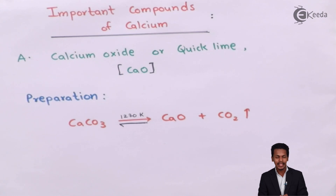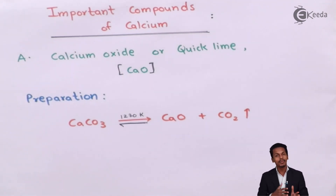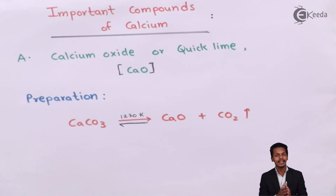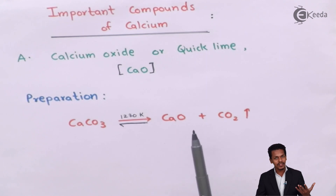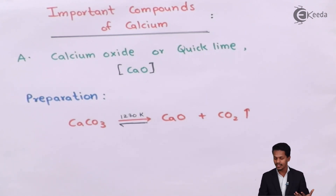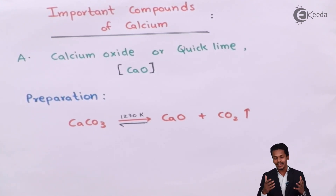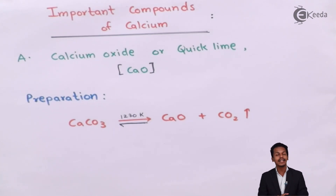This is a reversible reaction. To prepare CaO, carbon dioxide is liberated and that is how we obtain quicklime. However, since carbon dioxide is also present in the atmosphere, it can react again with calcium oxide to form CaCO3. That is why we must ensure we are giving more than 1270 Kelvin as temperature to obtain CaO, which is known as quicklime.